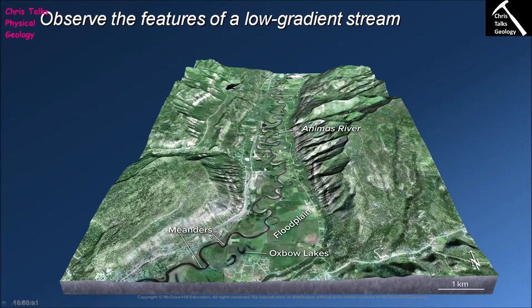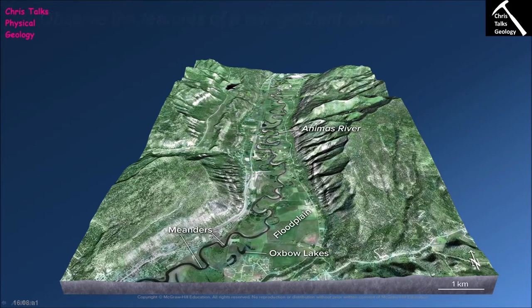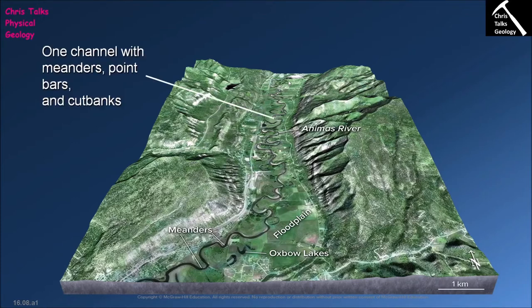Once we enter low gradient rivers we will tend to see a change in the type of river system that we get. In higher elevation areas with a steep gradient we are more likely to get braided river systems, which consist of multiple channels running approximately parallel to each other — quite wide but not very deep. In contrast, moving into a lower gradient system produces a shift from a multi-channel braided system to a single channel system, the most common type being a meandering river.